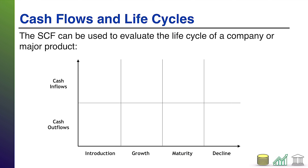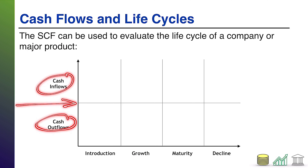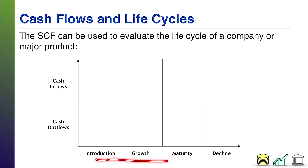As an investor, all you would see is the company's cash flows, so you'd evaluate the company. Inside the company, management could even break those cash flows down to a product level. Either way, different cash flows associated with different things can tell you something about the stage of life that thing is in. On my graph, the vertical axis has cash inflows above and cash outflows below, with the middle line as break-even. On the bottom axis are the phases: introduction, growth, maturity, and decline.